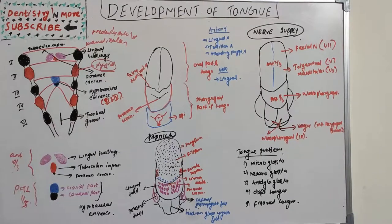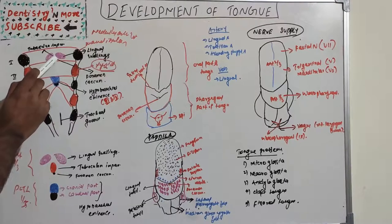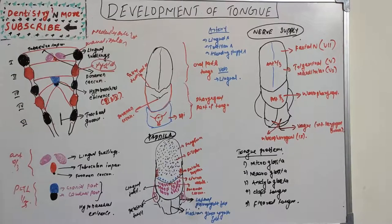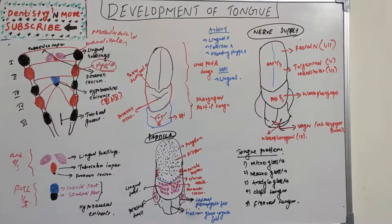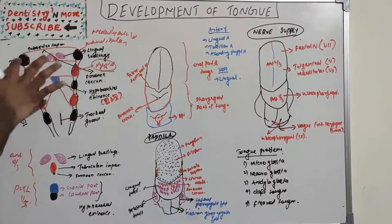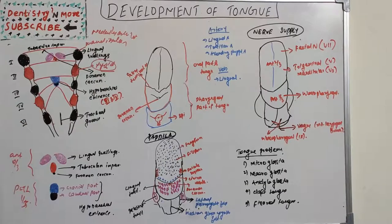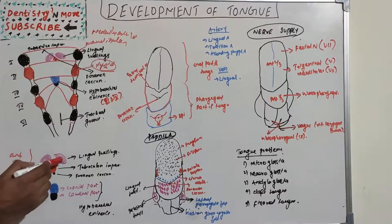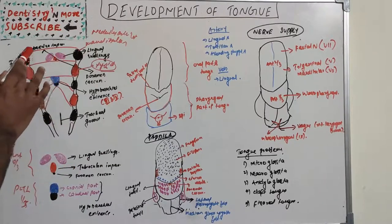For the anterior two-thirds of the tongue, we need to learn a few structures. The first is the tuberculum impar, which is present in the first pharyngeal arch — shown here in red. It starts as a swelling in the middle of the mandibular process and is flanked by two other swellings on either side. These flanking swellings are known as lingual swellings. The two lingual swellings and tuberculum impar are all present in the first pharyngeal arch.